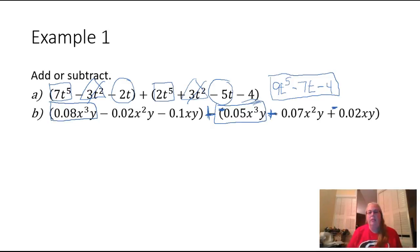So 0.08 plus negative 0.05 is going to give me 0.03. And then my variables will stay the same. I have an x to the third and I have a y.